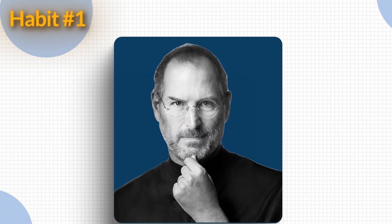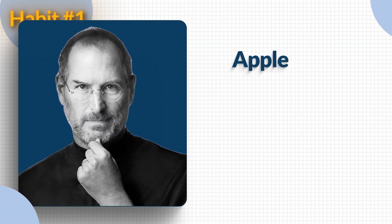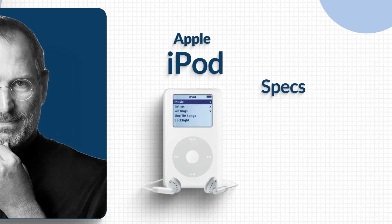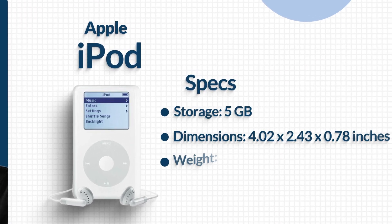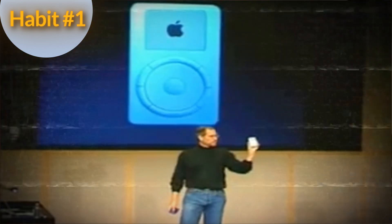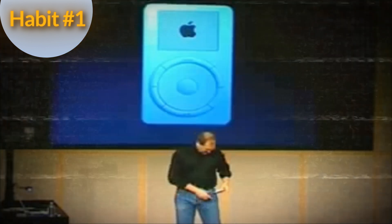Steve Jobs gave one of the best examples of this. When Apple launched the iPod, the official spec sheet said something like five gigabytes of storage, these are the dimensions, this is the weight — all kinds of details. It's technically correct but emotionally dead. Here's what Steve Jobs said on stage instead: 'Amazing little device holds a thousand songs. It goes right in my pocket.' Boom. You feel that, right? It's the same product but it's a different story.